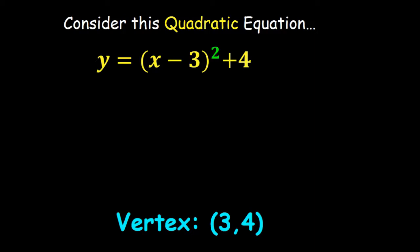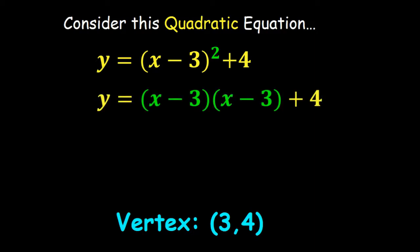Let's simplify this — let's multiply it out. x minus 3 squared is the same as x minus 3 times x minus 3, and that requires the FOIL method or the distributive property. In either case you end up with the expansion: x squared minus 6x plus 9, and of course there's still that plus 4 at the end.